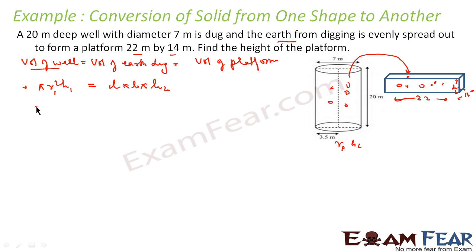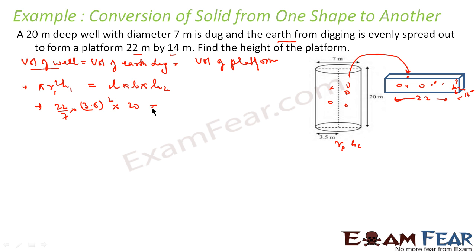Let's put the values in. Pi is 22/7, r1 is 3.5, squared, and h1 is 20. This equals l = 22, b = 14, and h2 is what we need to find.